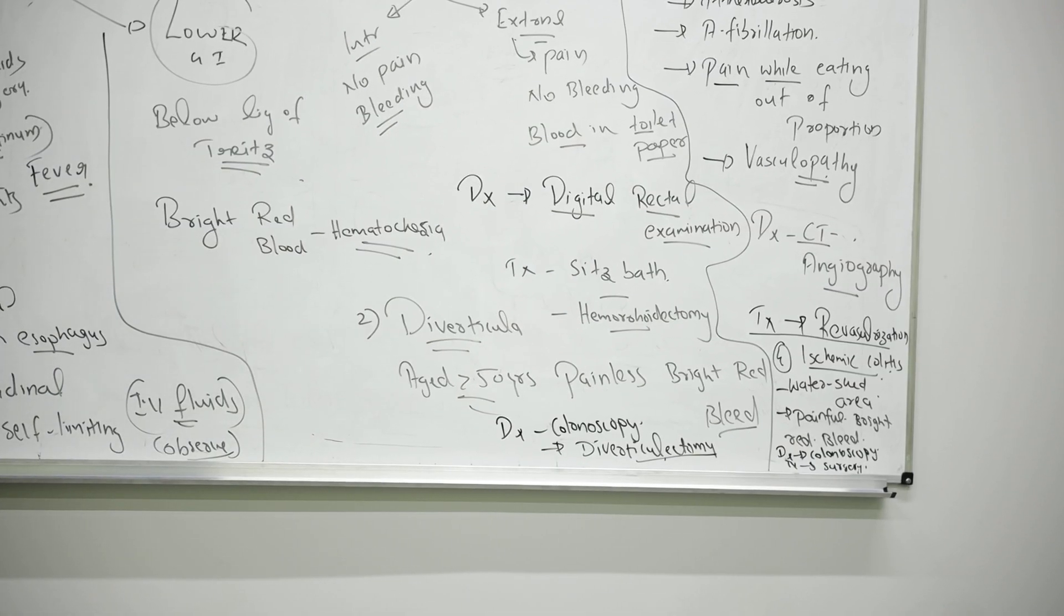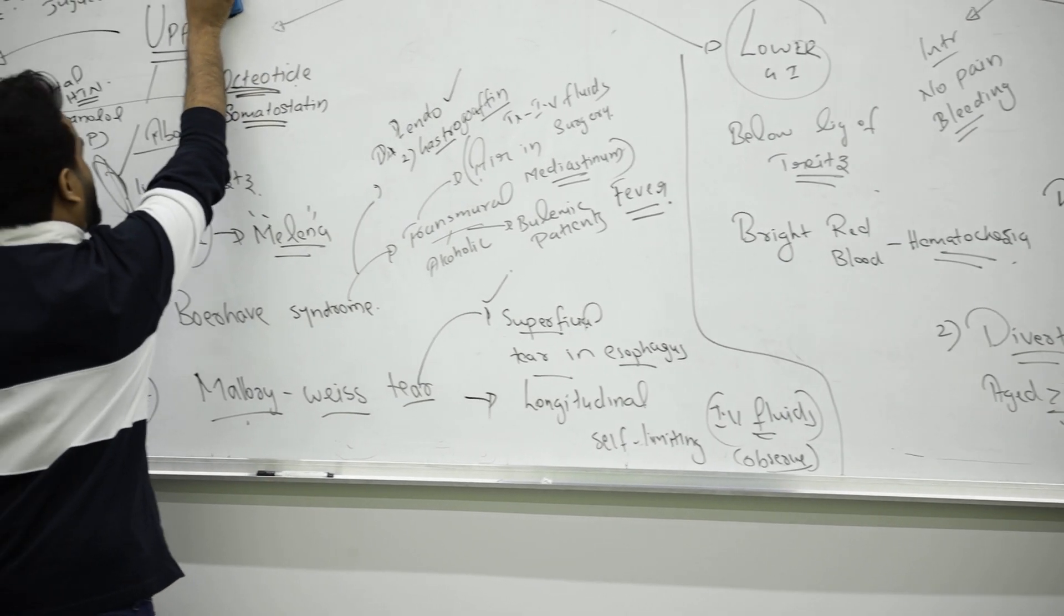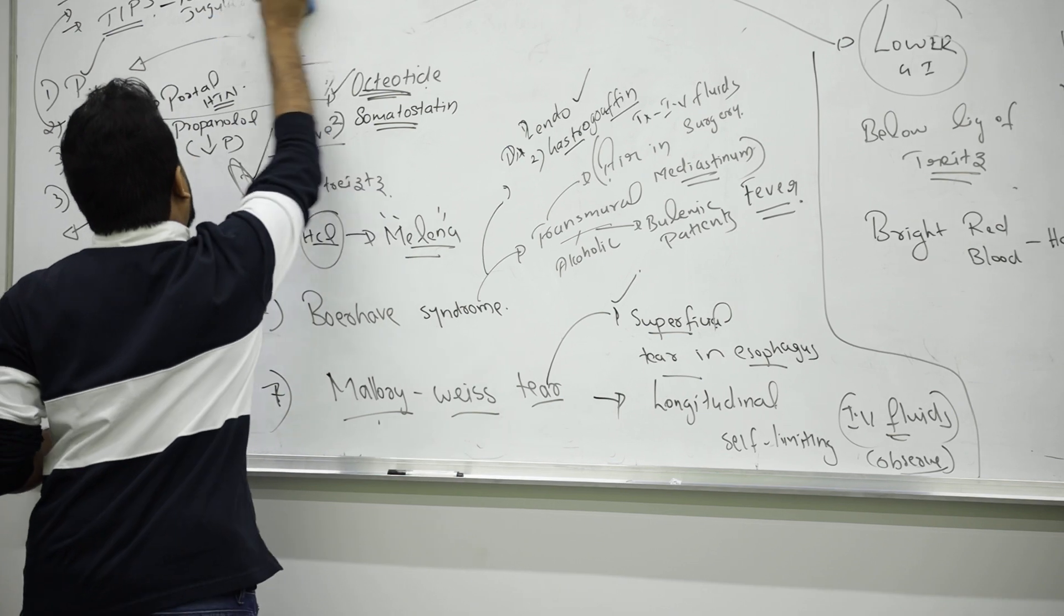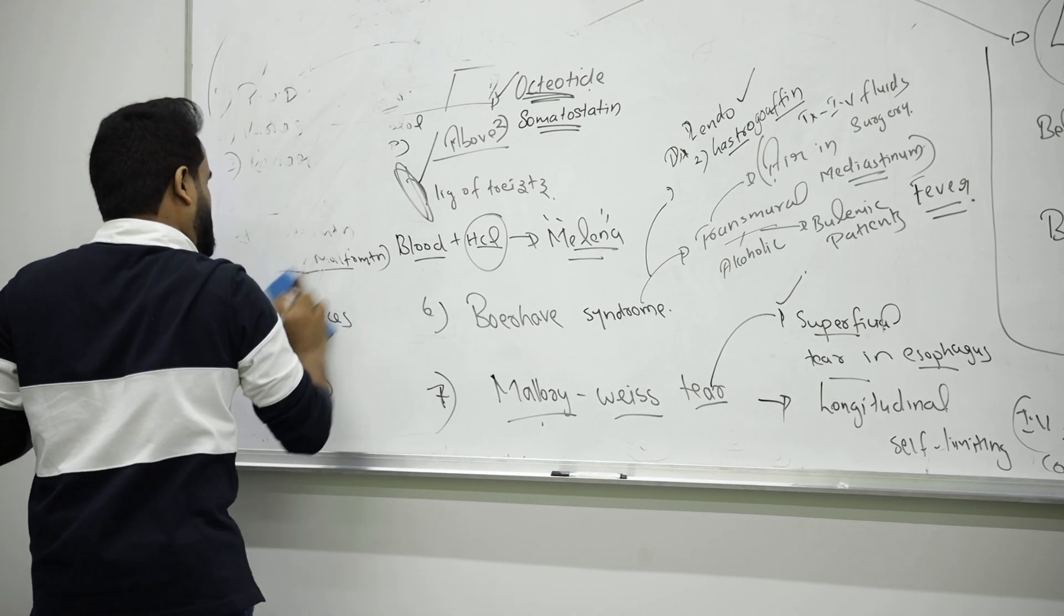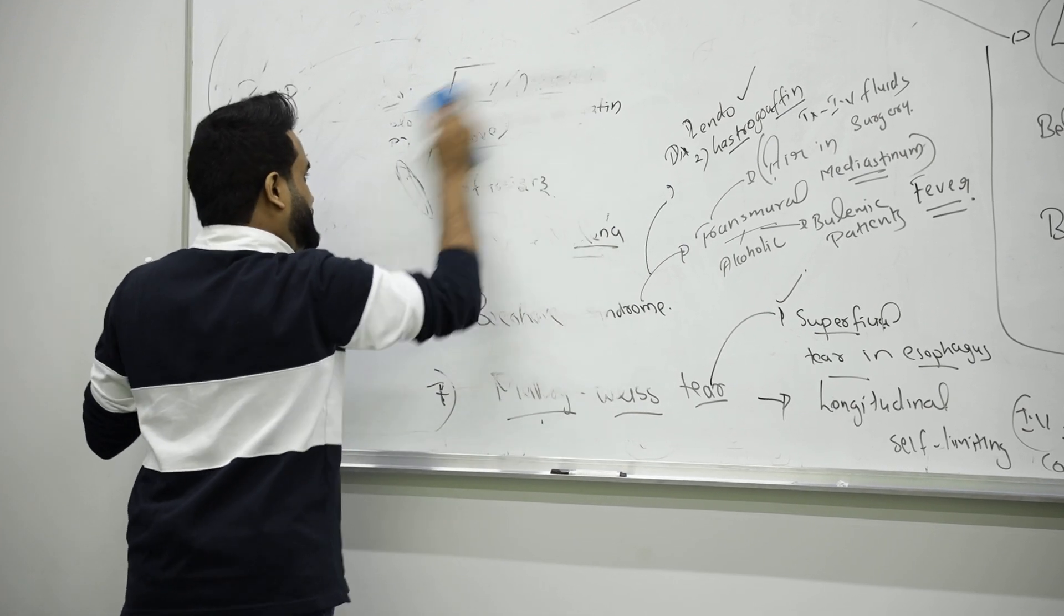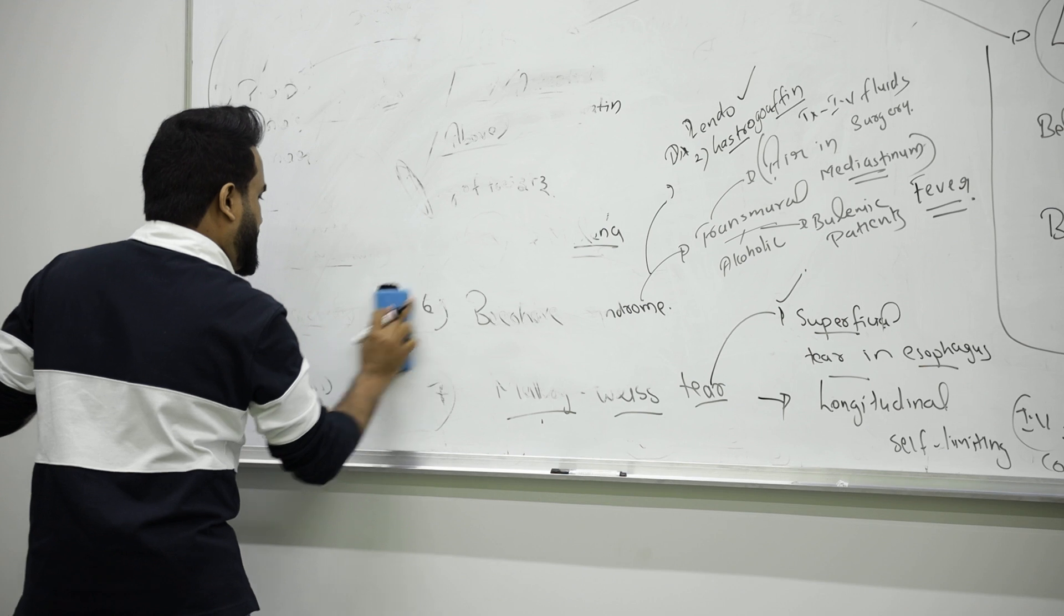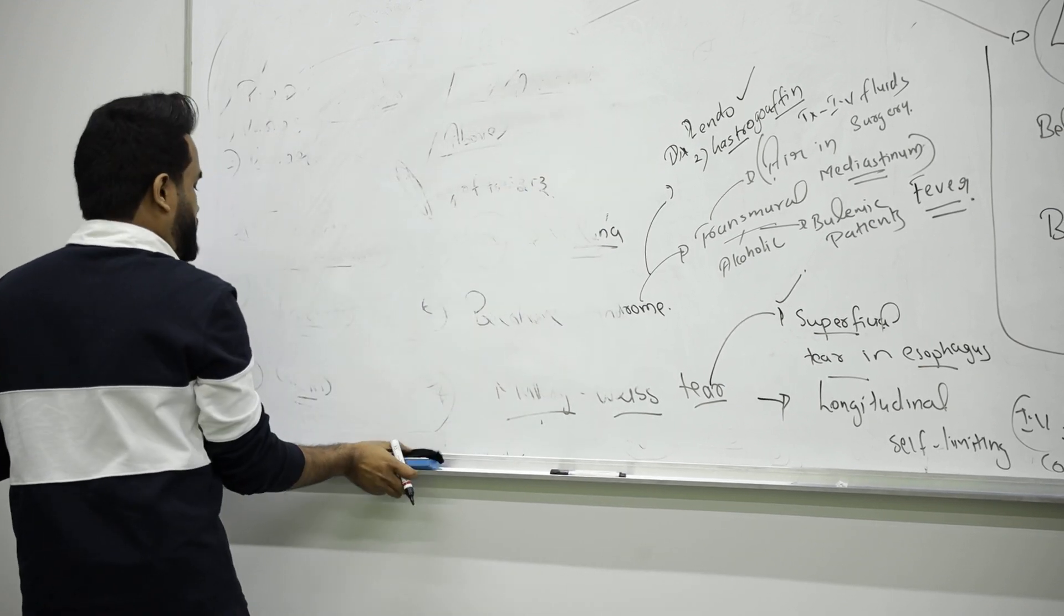These are the main examples of lower GI bleed. So these are the main ways how you differentiate between upper GI bleed and lower GI bleed.